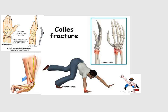Fractures of the distal part of the radius. I will start with Colles' fracture. Colles' fracture is a transverse fracture of the radius just above the wrist, with dorsal displacement of the distal fragments. So we have a transverse fracture of the distal part of the radius with the fragments resulting from this fracture dorsally displaced. This is Colles' fracture.